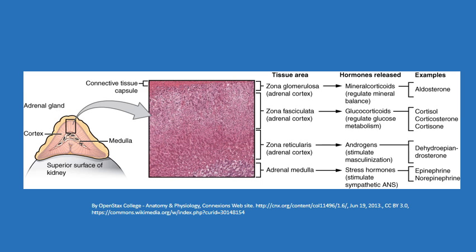The outer part of the adrenal gland, or the cortex, produces a whole separate set of hormones and is the more classical endocrine tissue. Looking at a cross-section of the adrenal cortex, there are different zones that produce different hormones. Starting at the zona glomerulosa, that area of the cortex produces mineralocorticoids — in particular, in humans, aldosterone.